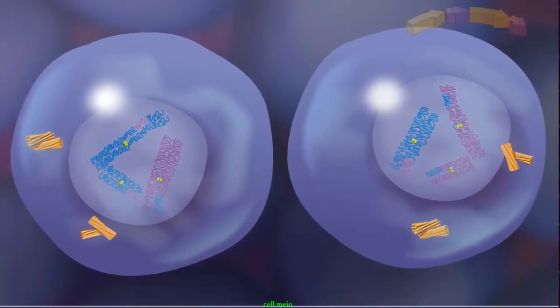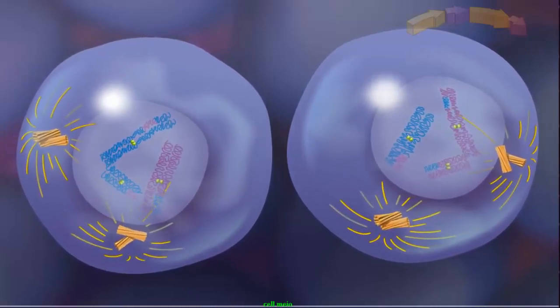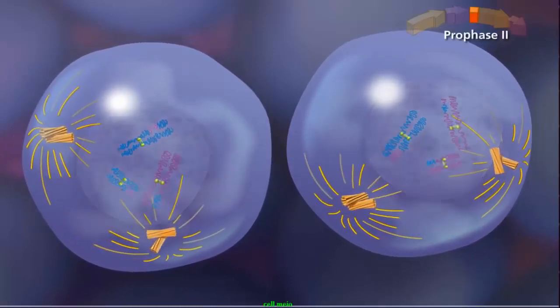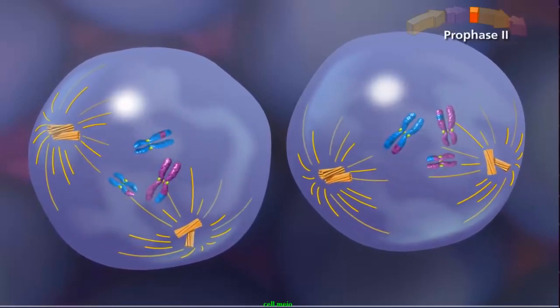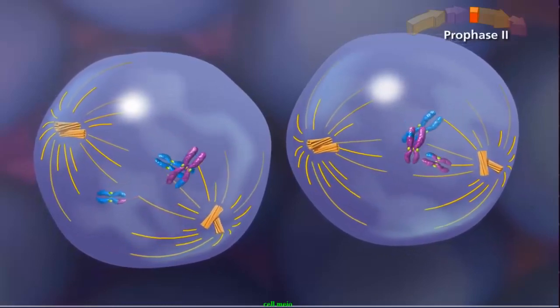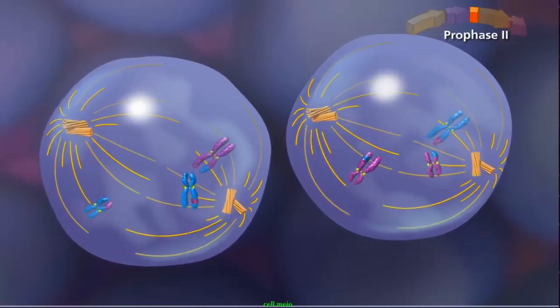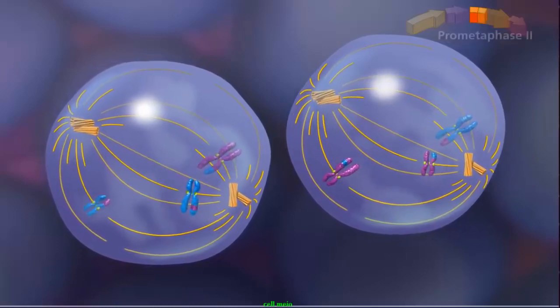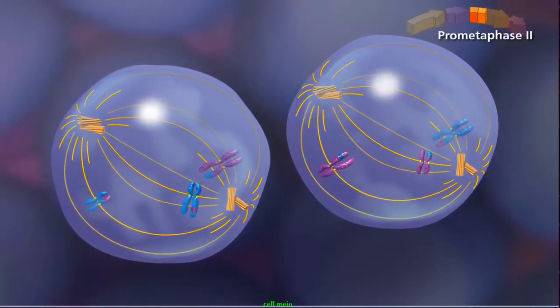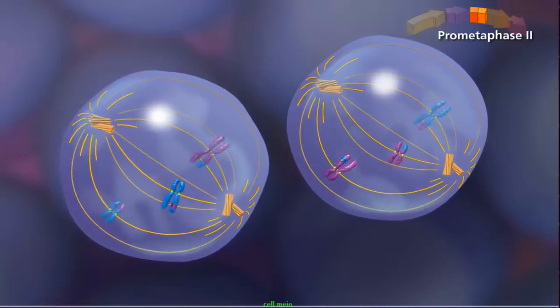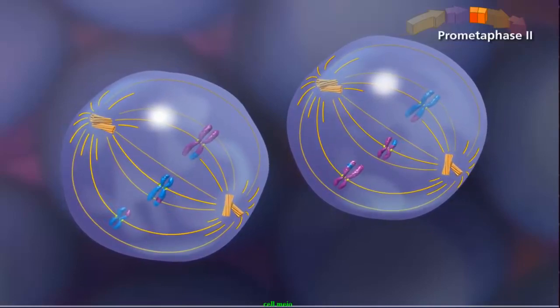Centrioles again duplicate and begin moving to opposite poles of each cell. In prophase II, the sister chromatids condense while the spindle starts to form as the nuclear envelope disappears. In prometaphase II, the sister chromatids attach to the spindle by kinetochore microtubules, with sister chromatids attached to opposite poles.